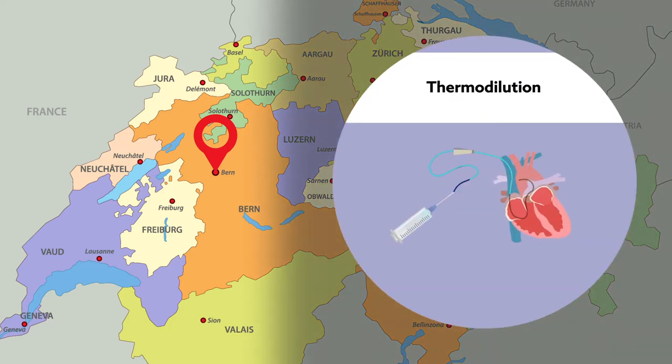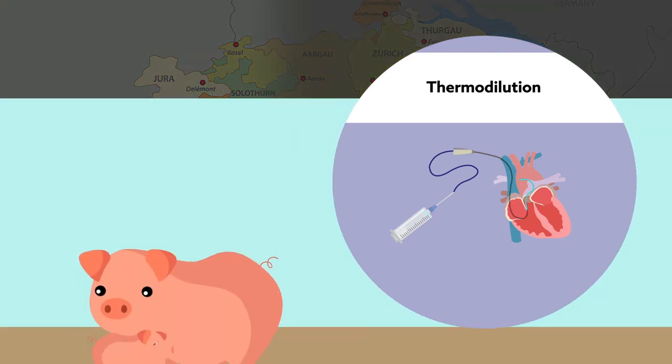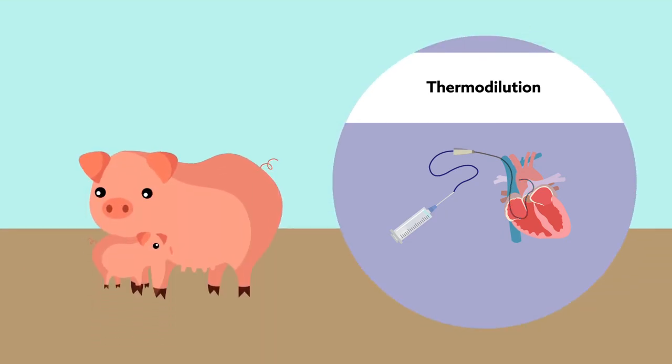Publishing in Anesthesiology, the researchers report that when using the novel method on pigs, they could reliably estimate the output and function of the right ventricle.